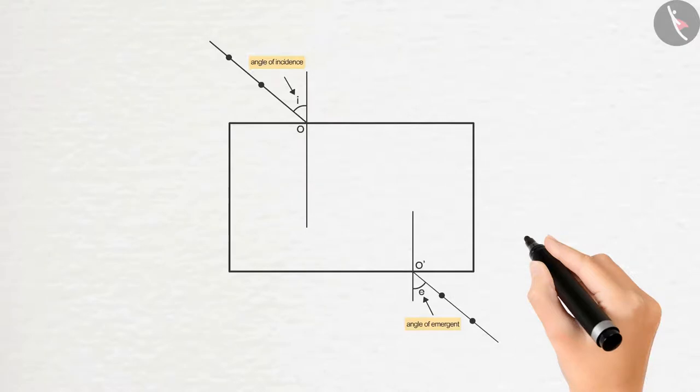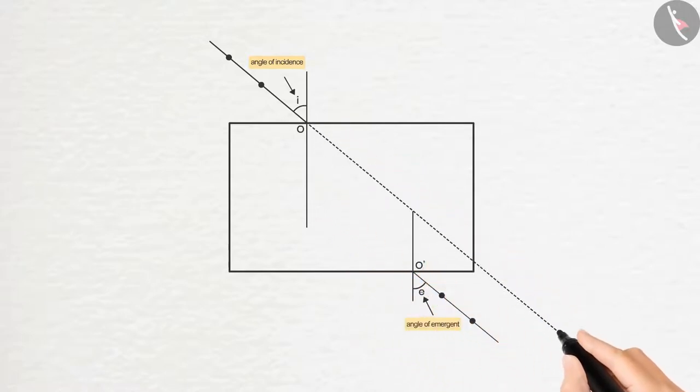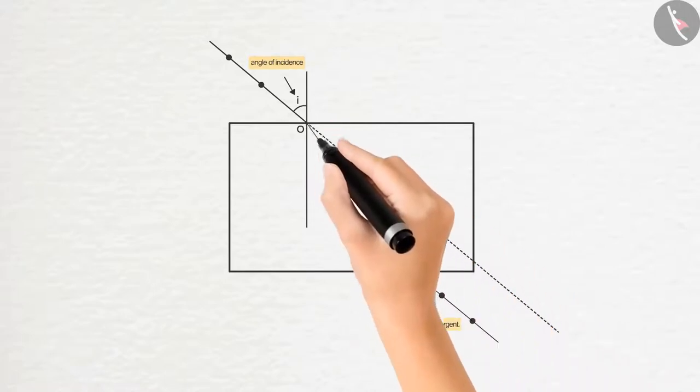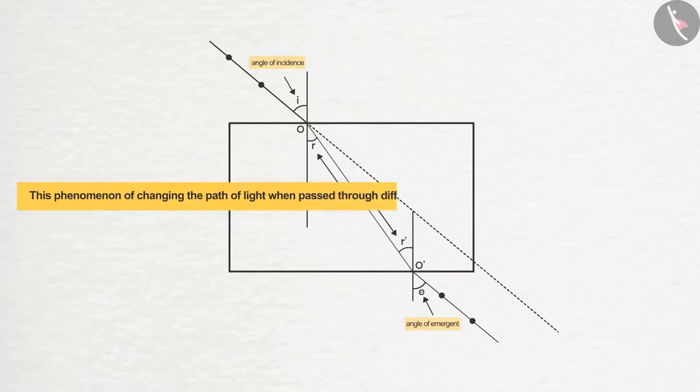Here the angle of refraction will be formed instead of the angle of reflection. Produce a straight line from the marks of the first two pins. Then join O and O'. A deflection can be seen between both the lines. Or it can be said that the ray of light changed its path while passing through the glass slab. This phenomenon of changing the path of light when passed through different transparent media is known as refraction of light.